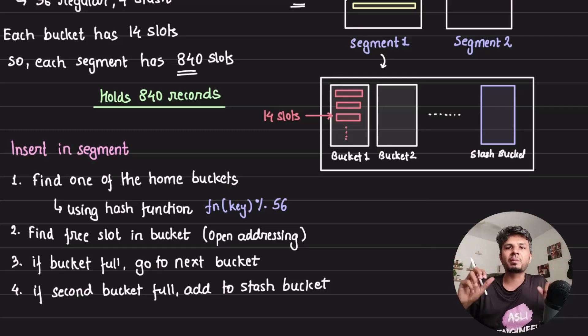If my stash bucket also is filled, I will trigger a split of the segment. That's where I would know that my segment is full. Because it means that there is less space and more items to be added. So it's a trigger point for me to split the segment and just trigger a rehashing of those elements affected by it.